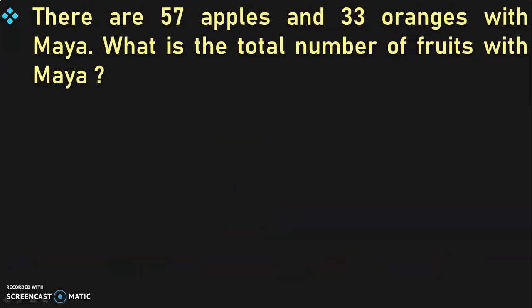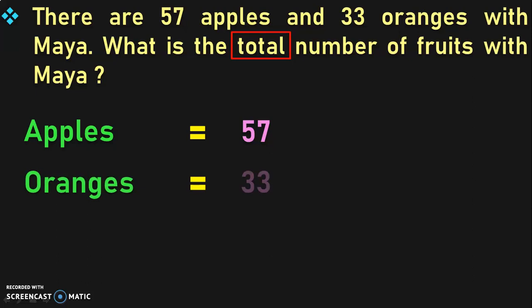There are 57 apples and 33 oranges with Maya. What is the total number of fruits with Maya? After reading the word problem, identify the keywords. The keyword here is 'total'. This is the second keyword we are seeing with respect to addition. When you see the word 'total', you can relate that this problem is related to addition.